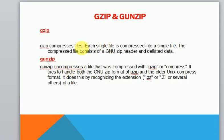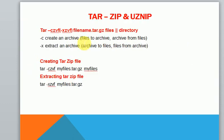gzip is used for compressing files, that is creating zip files, and gunzip is used for uncompressing files, that is extracting files from zip files. These are the two commands, and there are two other commands we will be using for archive files, that is tar.